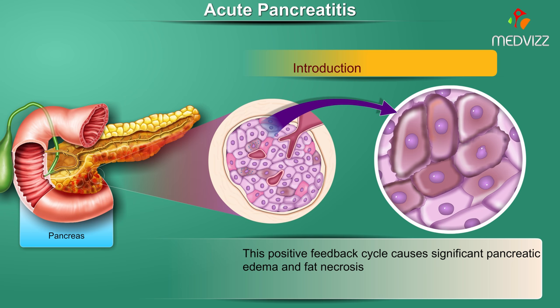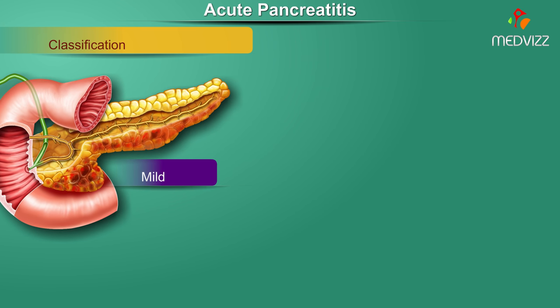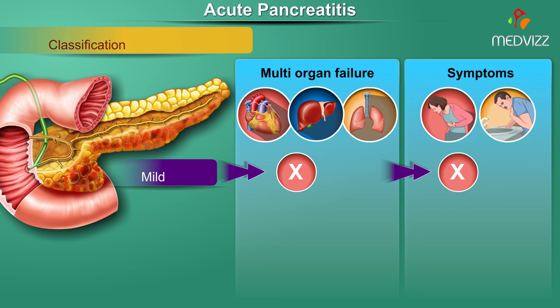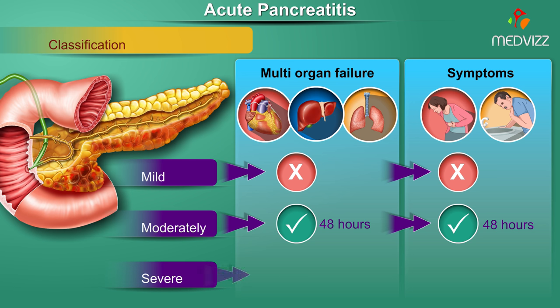Acute pancreatitis is divided into three categories: Mild acute pancreatitis, characterized by the absence of organ failure and local or systemic complications. Moderately severe acute pancreatitis, characterized by transient organ failure resolving within 48 hours and/or local or systemic complications without persistent organ failure. Severe acute pancreatitis, characterized by persistent organ failure that may involve one or multiple organs or organ systems.